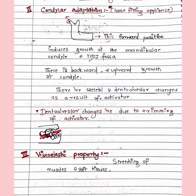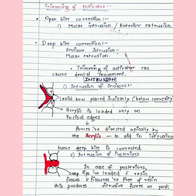Since musculature is relaxed during sleep, we create extreme vertical opening, which causes the reflex to act even when the musculature is relaxed. The second mode of action is condylar adaptation: the forward position of the mandible induces growth at the condyle and TMJ fossa, with backward and upward growth at the condyle. This is the reason why the activator is a loose-fitting appliance — to accommodate condylar growth and the associated downward growth of the mandible. Some contradicted this, attributing the action to viscoelastic properties — the stretching of muscles and soft tissues during swallowing. The next video will cover trimming of the activator.